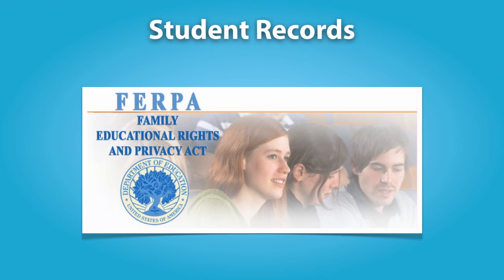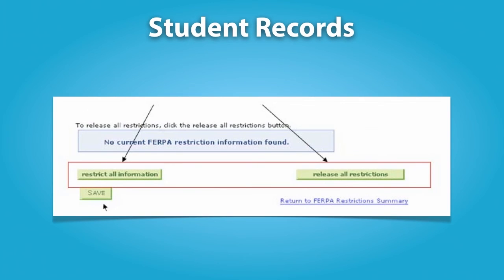The fourth context in which student privacy rights are implicated revolves around student records. The Family Educational Rights and Privacy Act, known as FERPA, is a federal law that protects the privacy of student education records. The law applies to all schools that receive funds from the federal government, which in practicality includes most private schools. FERPA gives parents certain rights with respect to their children's education records. These rights transfer to the student when he or she reaches the age of 18 or attends a school beyond the high school level. Students to whom the rights have transferred are called eligible students. Parents or eligible students have the right to inspect and correct errors in a student's education records maintained by a school. Generally, schools must have written permission from the parent or an eligible student in order to release any information from a student's education record.